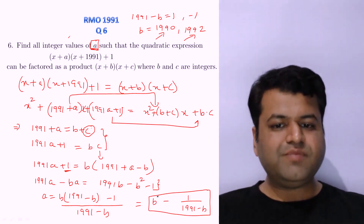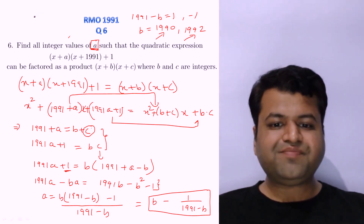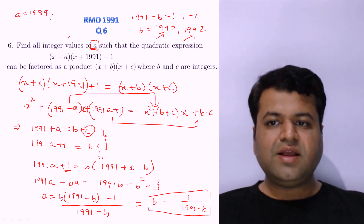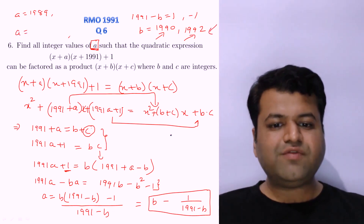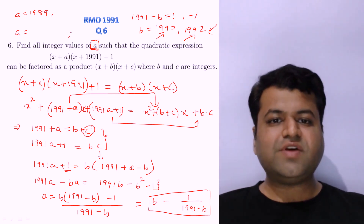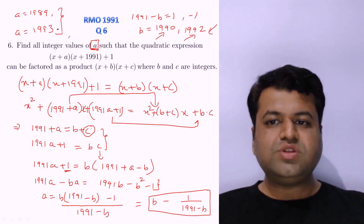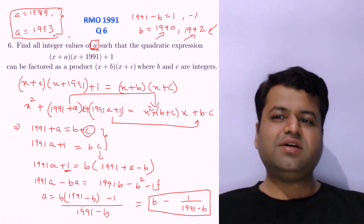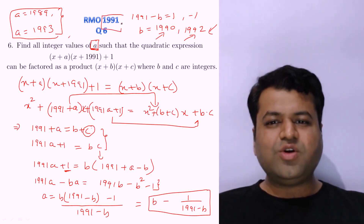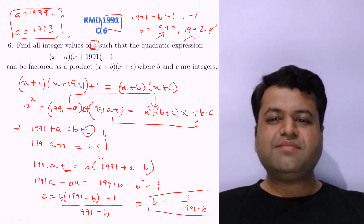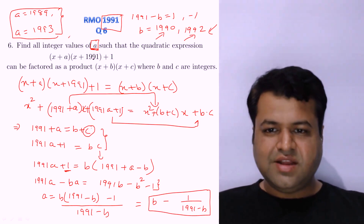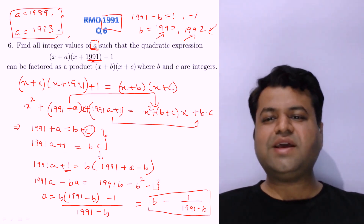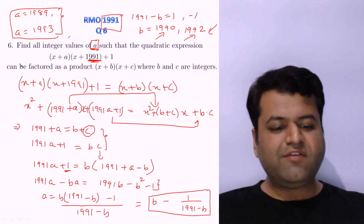Substituting B = 1990 gives A = 1990 - 1 = 1989, and substituting B = 1992 gives A = 1992 - (-1) = 1992 + 1 = 1993. So the two possible values of A are 1989 and 1993. It would be nice if one answer were 1991 since this is a question from year 1991, but regardless, the answer is 1989 and 1993.